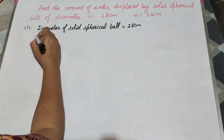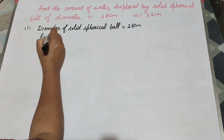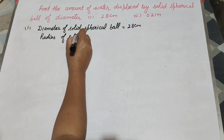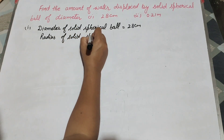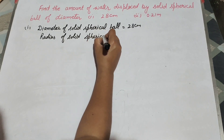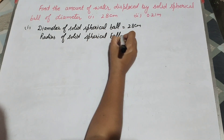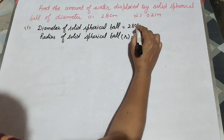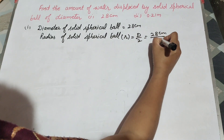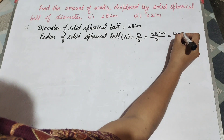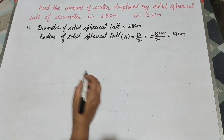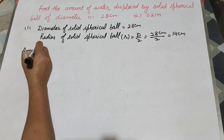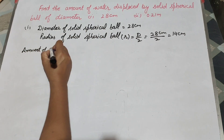So we need to find its radius. The radius of the solid spherical ball is equal to diameter divided by 2. The diameter is 28 centimeters, so 28 divided by 2 is equal to 14 centimeters. So the radius is equal to 14 centimeters.